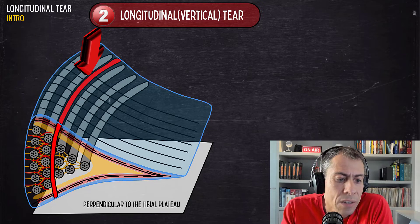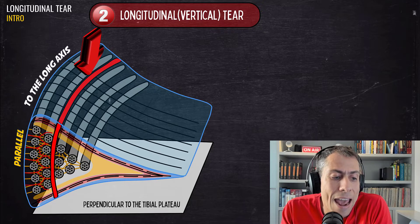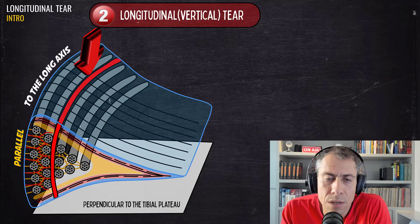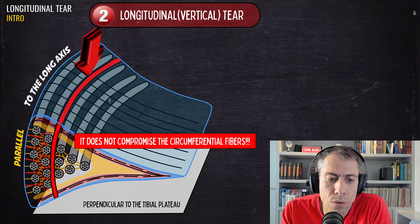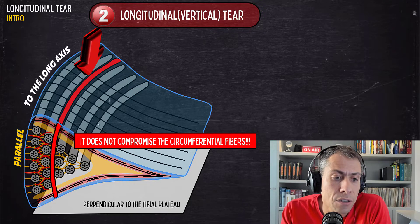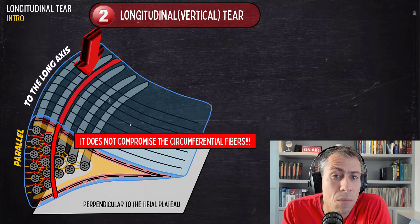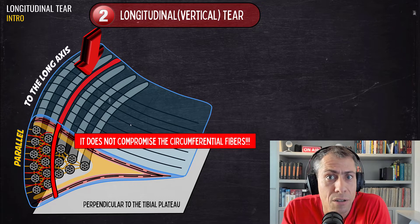The longitudinal vertical tear is a tear that is perpendicular to the articular surface, or perpendicular to the tibial plateau, and it's parallel to the long axis of the meniscus. The good news about this tear — the same thing as the horizontal tear — is that it does not compromise the circumferential fibers. So meniscal function is maintained in cases of longitudinal vertical tears, especially when the inner fragment is in its own place and has not migrated.